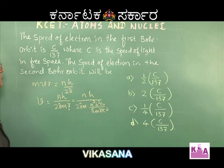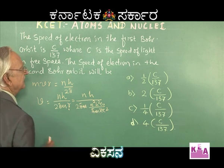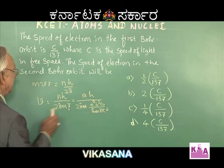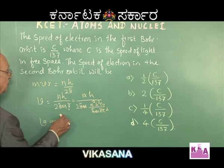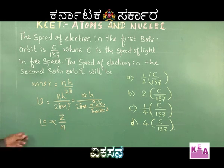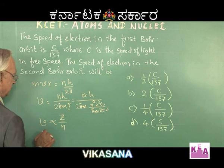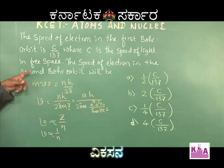The π and m cancel, and one n cancels, giving us the result that v is proportional to z/n. This is the key equation required to solve this problem. For the same value of z, v is proportional to 1/n.